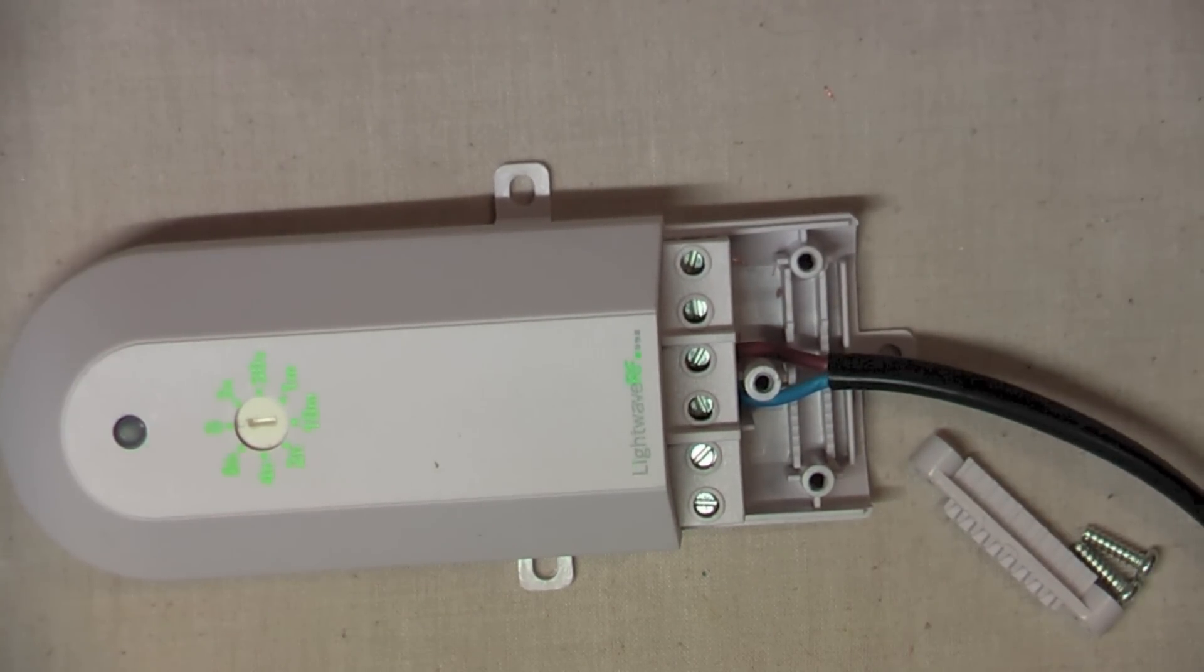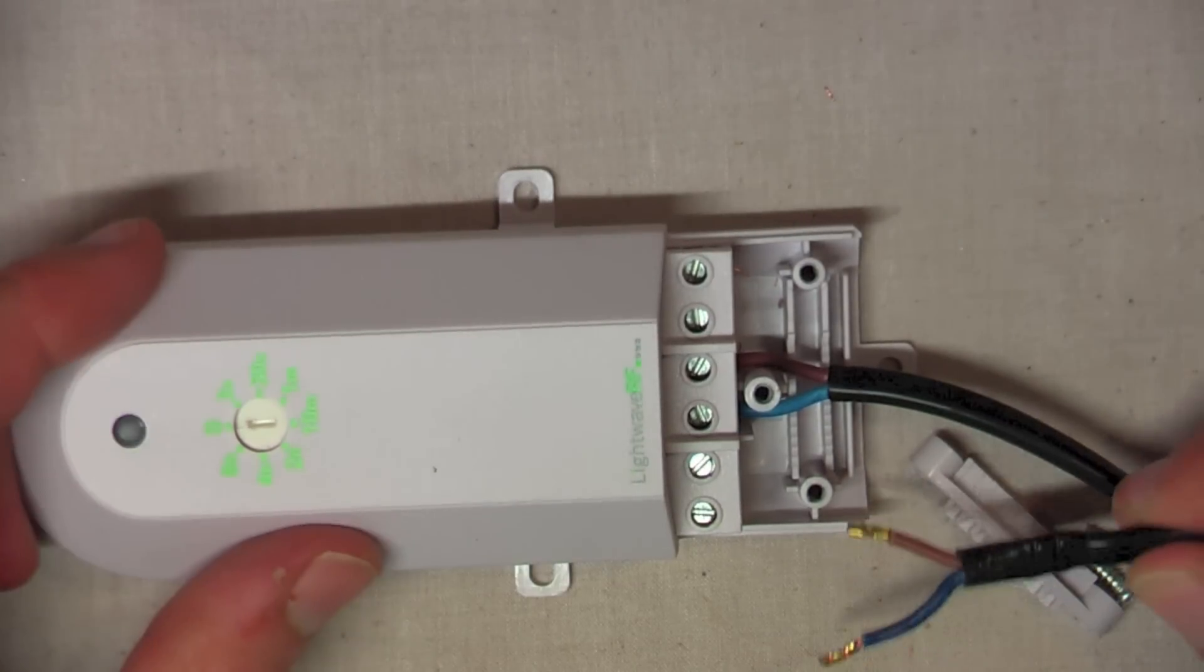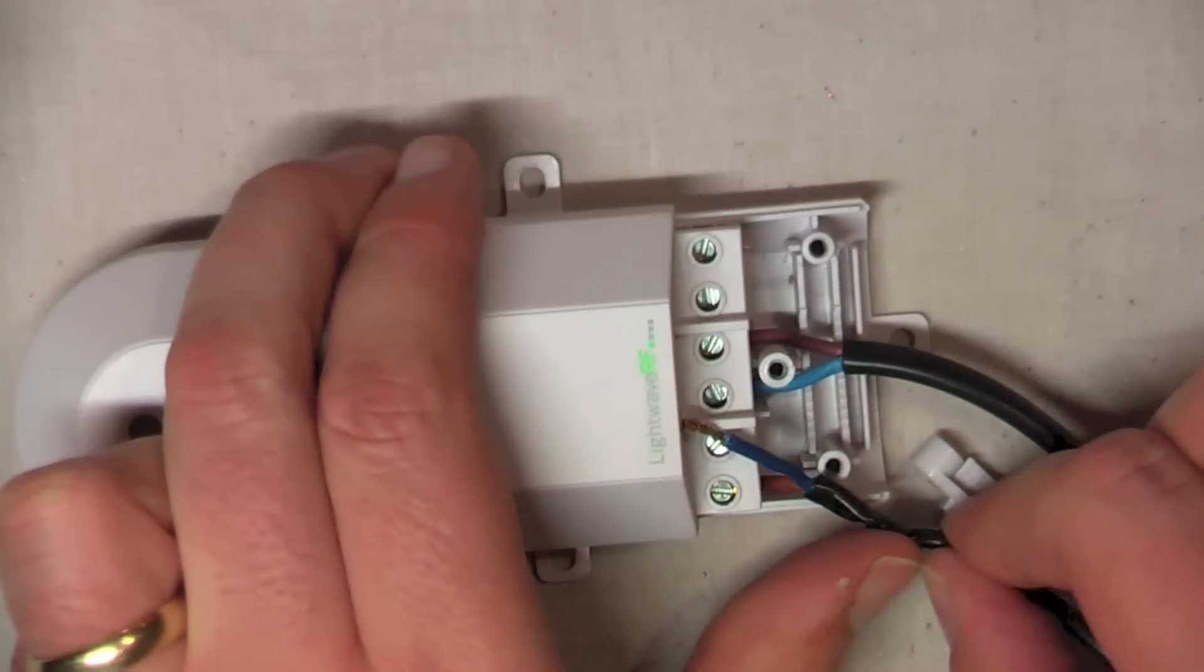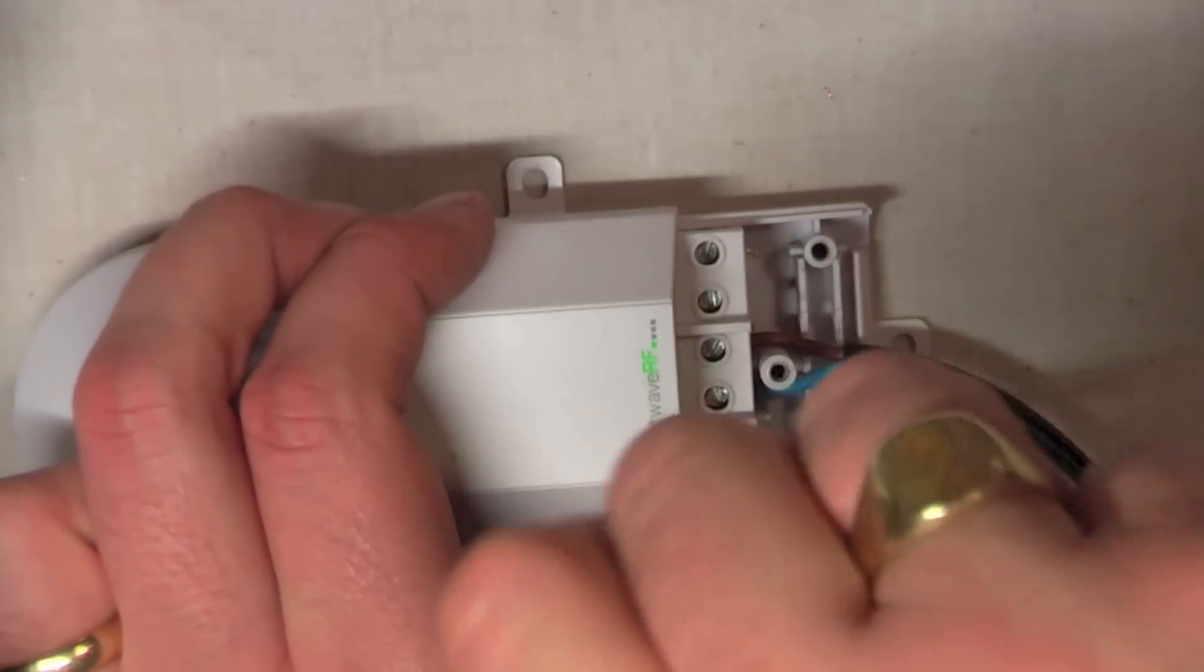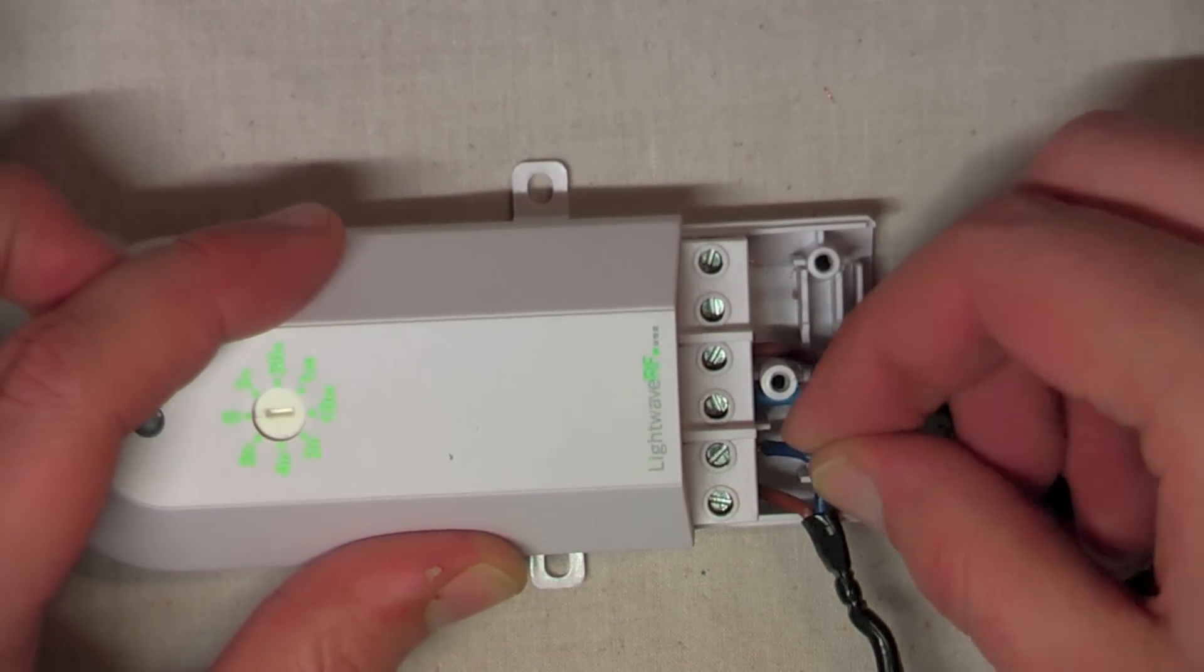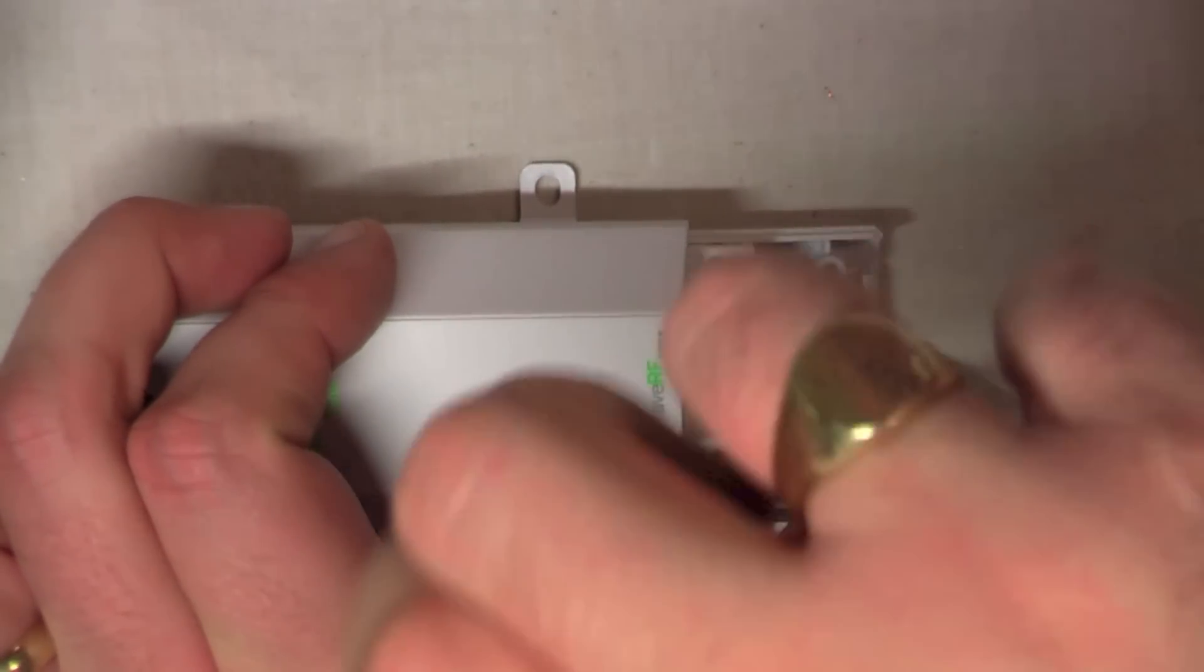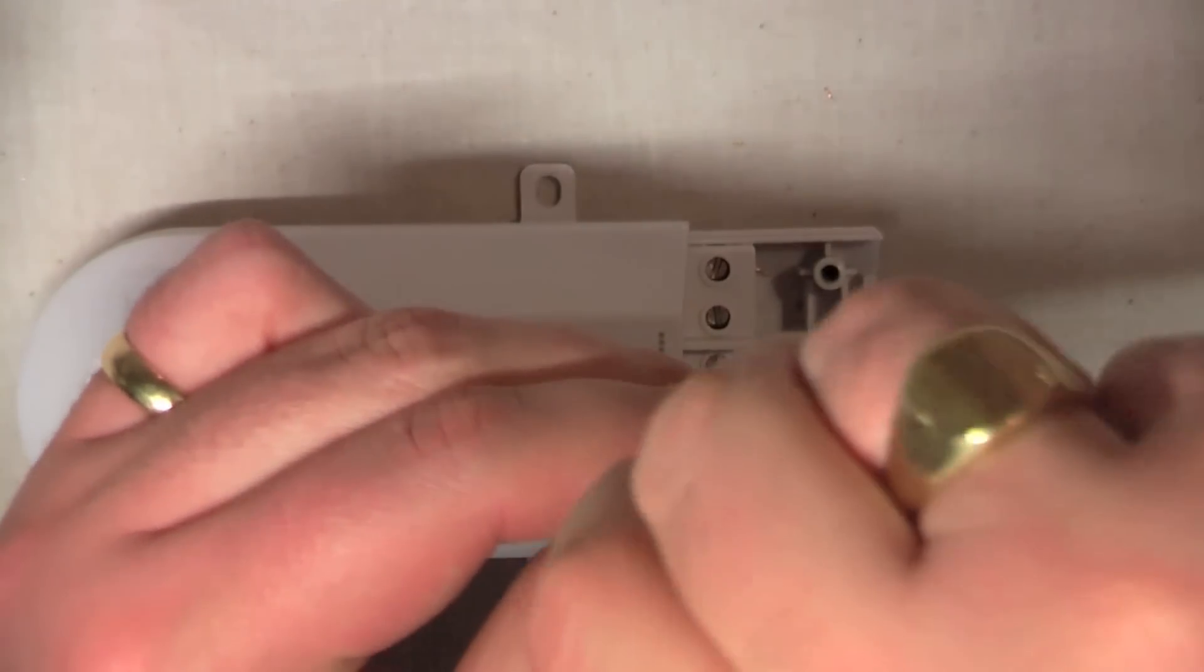Taking the other piece of wire connected to the table lamp, we'll put this into the load side. Once again, brown into live, which is on the far end. We'll pop that in there. And tighten that screw. And blue into the neutral connection, next to the other one. Pop that in there. Just hold that there a sec. We'll tighten this screw up as well.